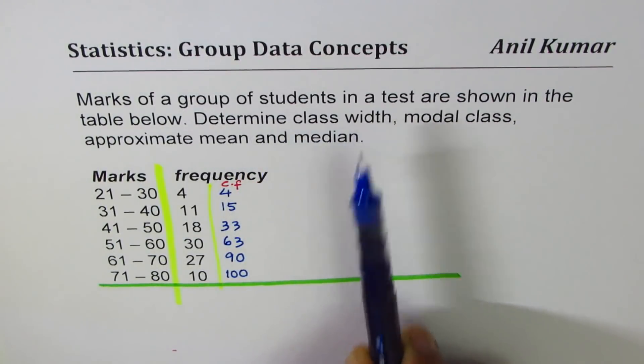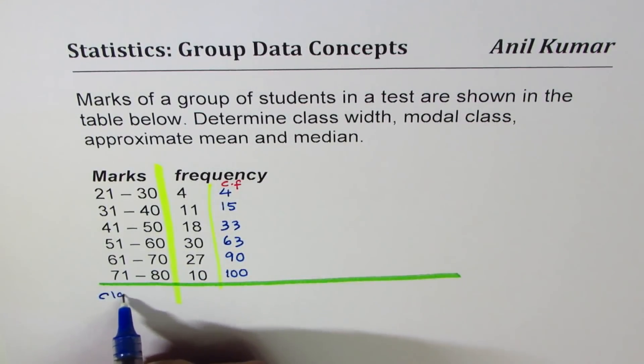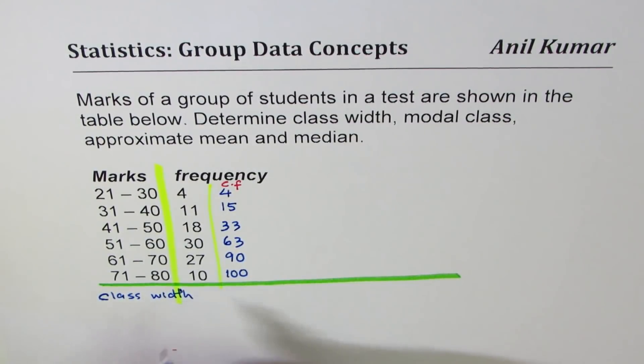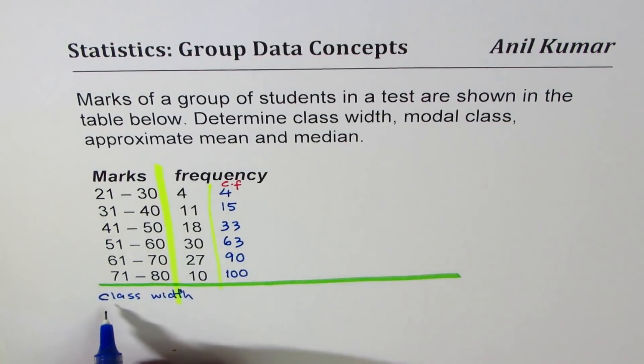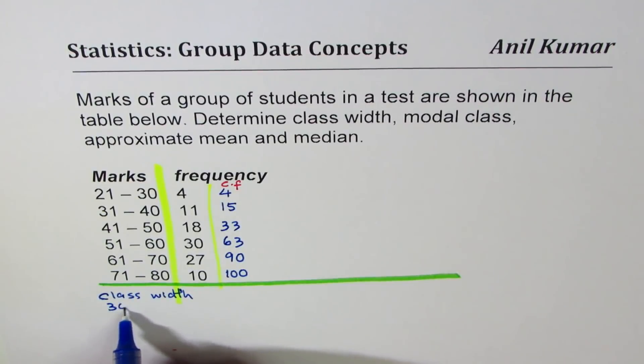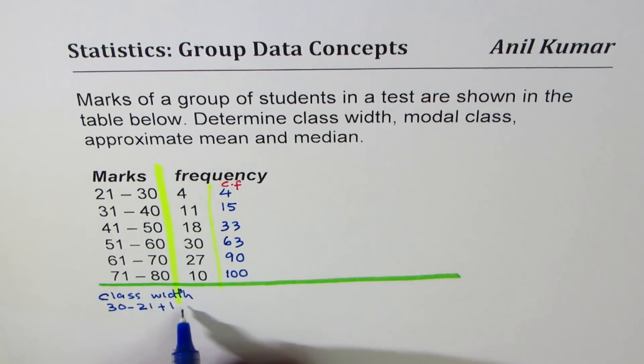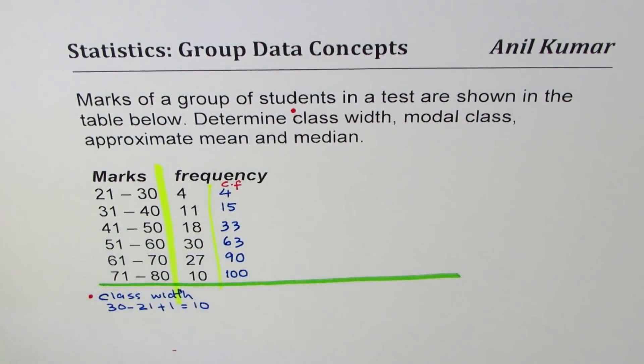We need to determine class width. What is class width? The interval is from 21 to 30. How many marks are considered? You're taking away 21 from 30, you get 9. But since both are included we'll add 1 and we know it is 10. So the class width is 10.